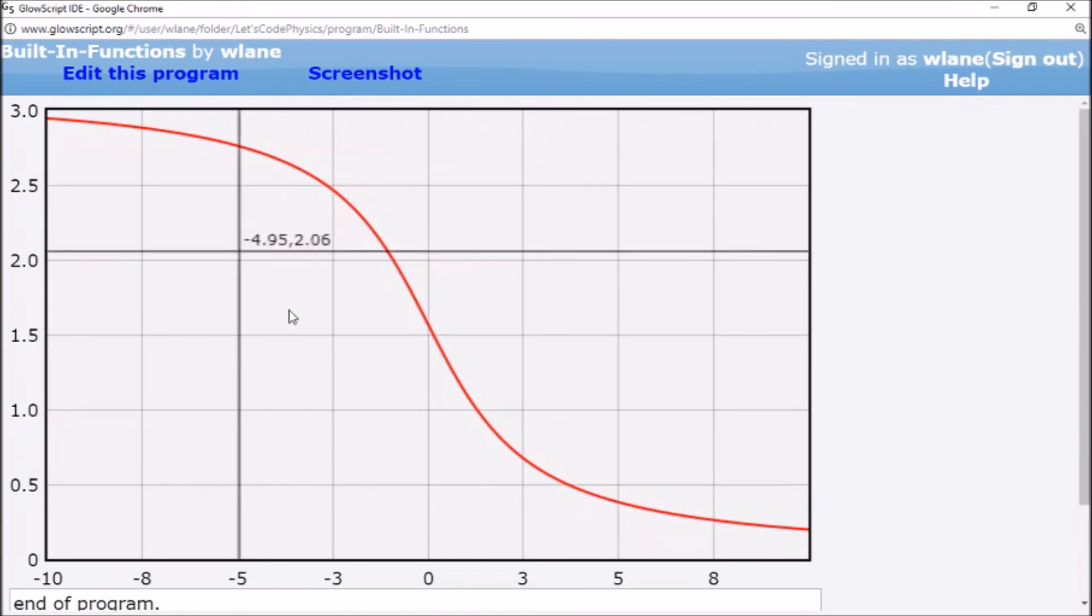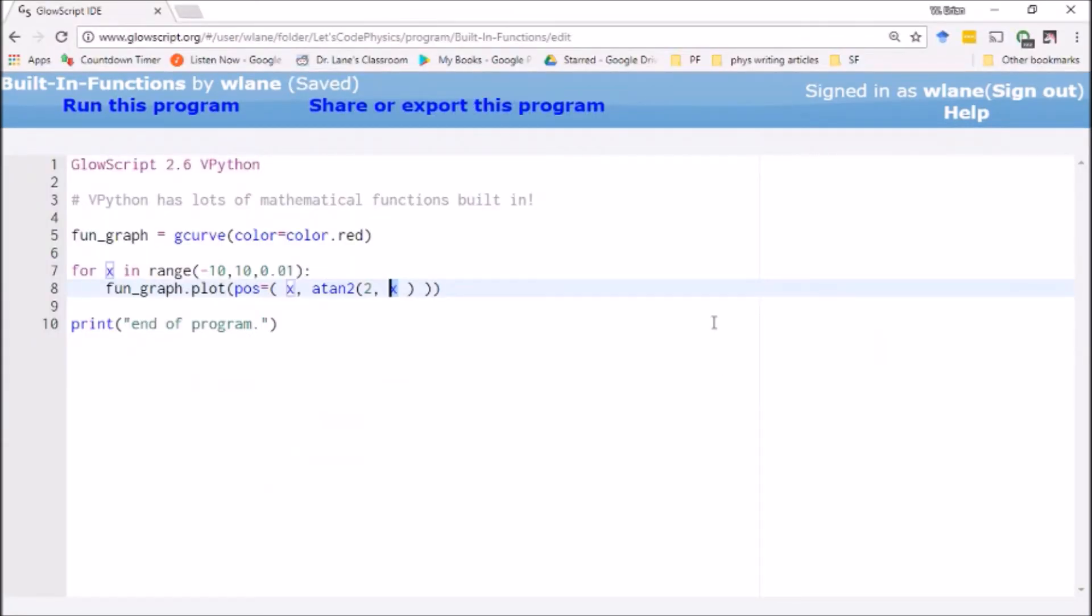And of course, I get a similar looking thing. It's flipped around because my x is on the denominator now. But it's nice because it handles those edge cases of getting close to 90 degrees a little bit better than the regular arctangent function does.